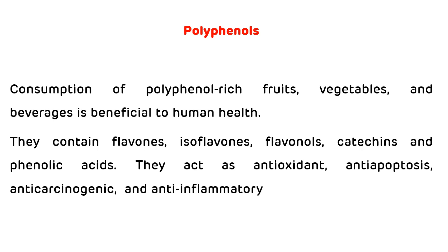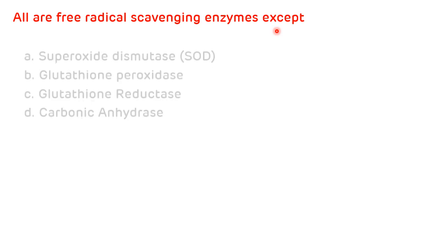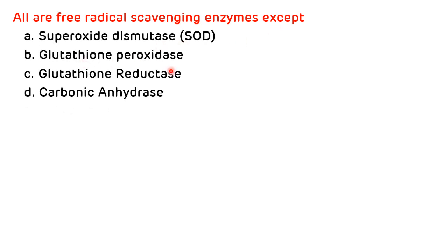Now for multiple choice questions. First question: all are free radical quenching enzymes except — options are: superoxide dismutase, glutathione peroxidase, glutathione reductase, and carbonic anhydrase. The four free radical quenching enzymes are superoxide dismutase, glutathione peroxidase, glutathione reductase, and catalase. So the correct answer is D, carbonic anhydrase.